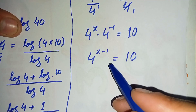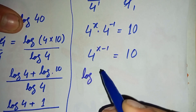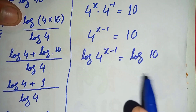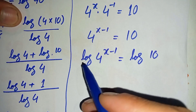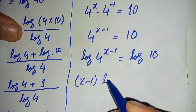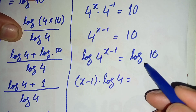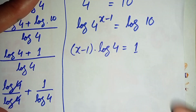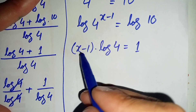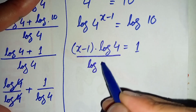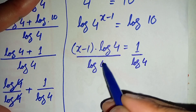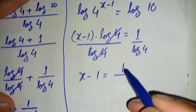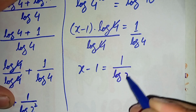Again we take the common log on both sides: log of 4 raised to power (x − 1) equals log of 10. Using the log power property, we shift (x − 1) to the front, giving (x − 1) times log of 4 equals log of 10. Since the base is 10, log of 10 equals 1. We then divide both sides by log of 4, and rewrite log 4 as log of 2 squared, which is 2 times log 2.